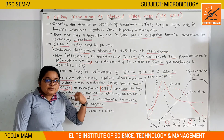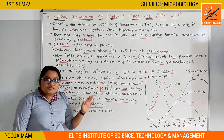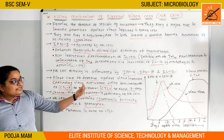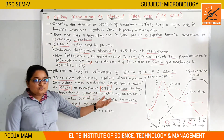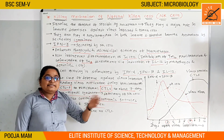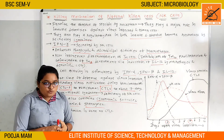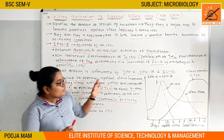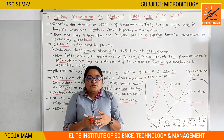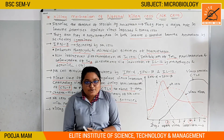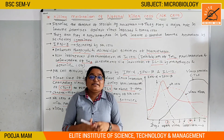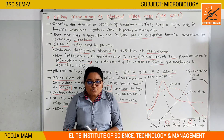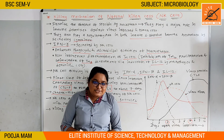In natural killer cells, there is no antigen-specific receptor. This is the key distinction from cytotoxic T lymphocytes. Thank you so much for watching this video. If you have any doubts, please ask in the comment box. Thank you!